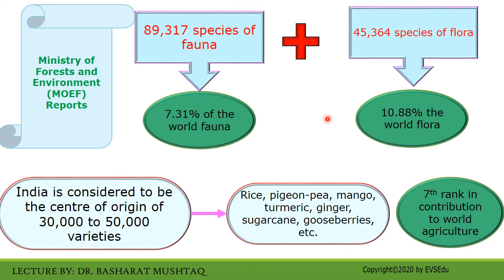In animals, arthropods and insects are predominant. India is also rich in agrobiodiversity. There are 167 crop species and wild relatives. India is considered to be the center of origin of 30,000 to 50,000 crop varieties such as rice, fish, pigeon pea, mango, turmeric, ginger, sugarcane, etc. This has ranked India seventh in contribution to world agriculture.